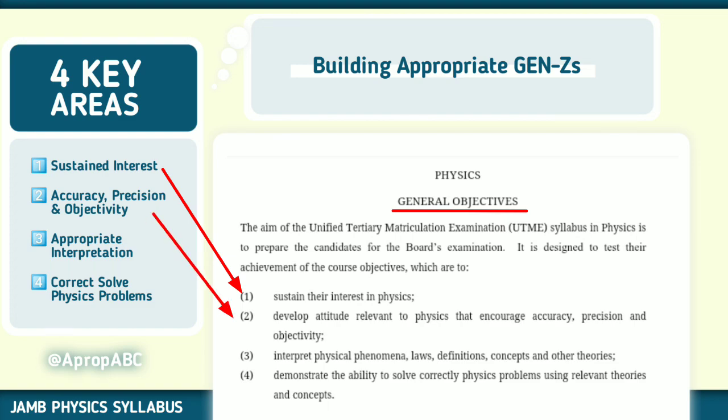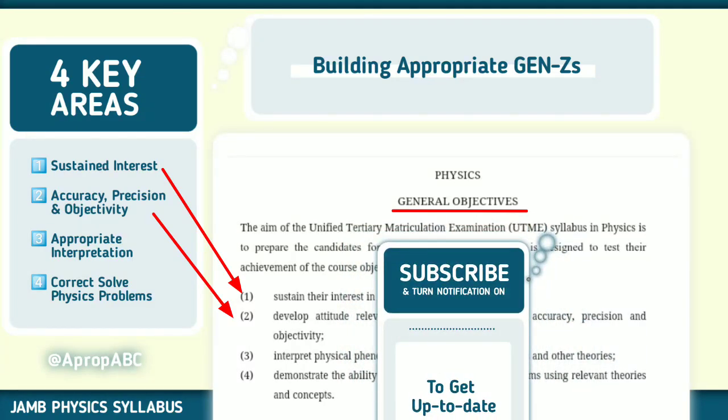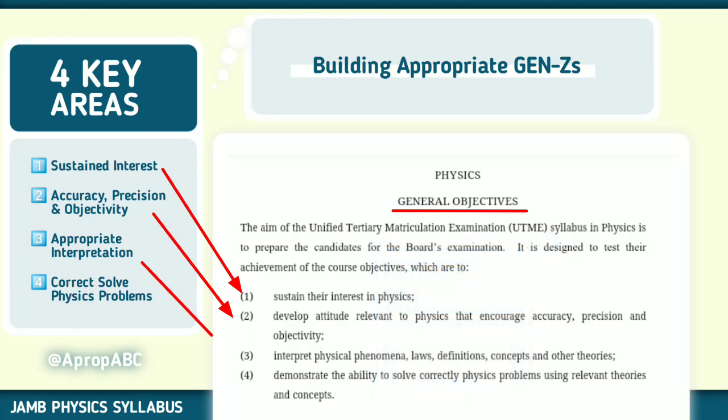The second one is accuracy, precision, and objectivity. So they want you to be accurate with some of the values you give them. Some values may be nearly like the answer but not the answer. Number three, appropriate interpretation. You have to interpret questions correctly. So the laws, concepts, theories - know them very well so that you know when they are used in any questions you are given. The fourth one, you have to correctly solve the problem. After you have gotten the law, now solve them very well with the principles that guide those particular questions.